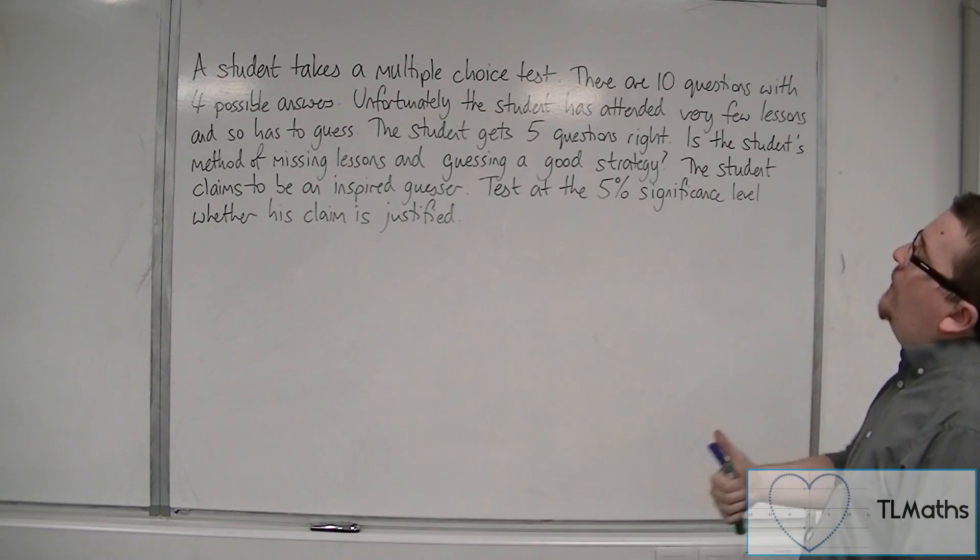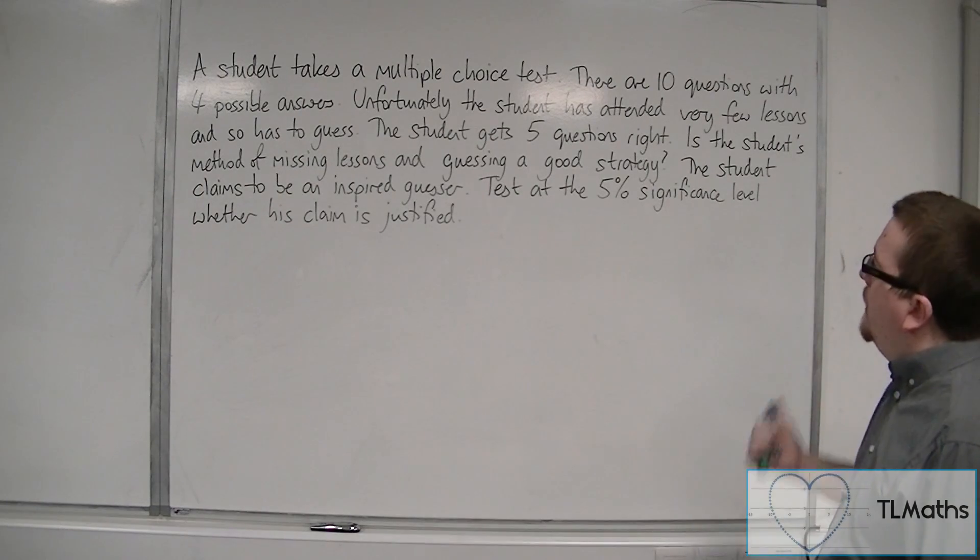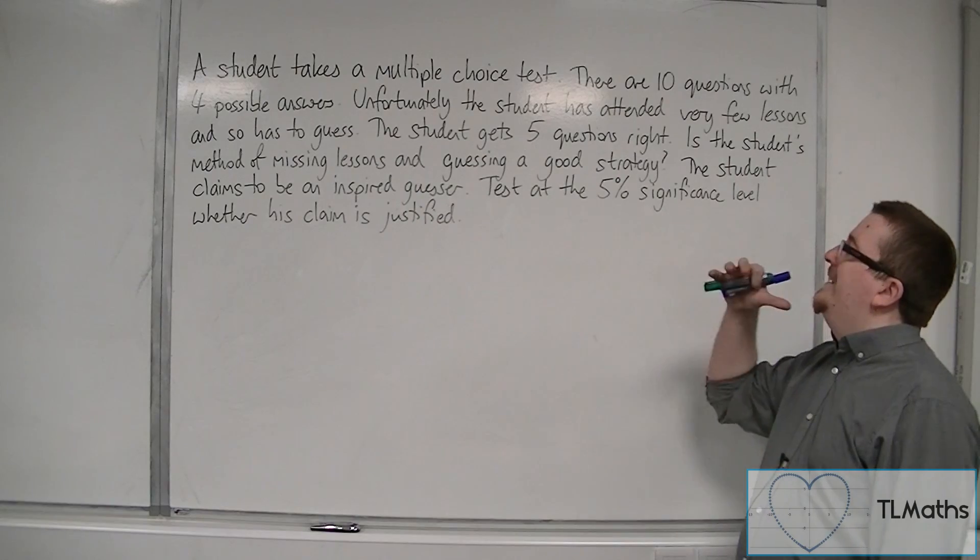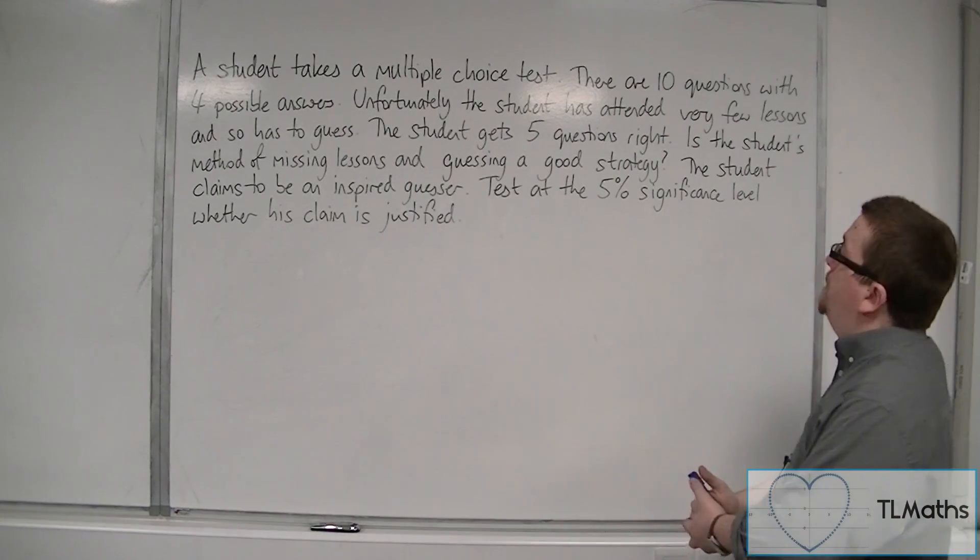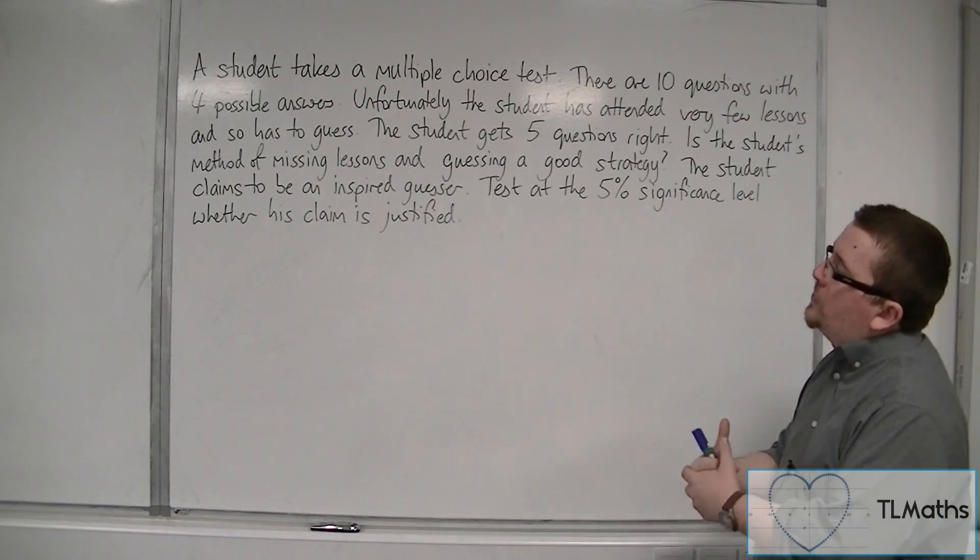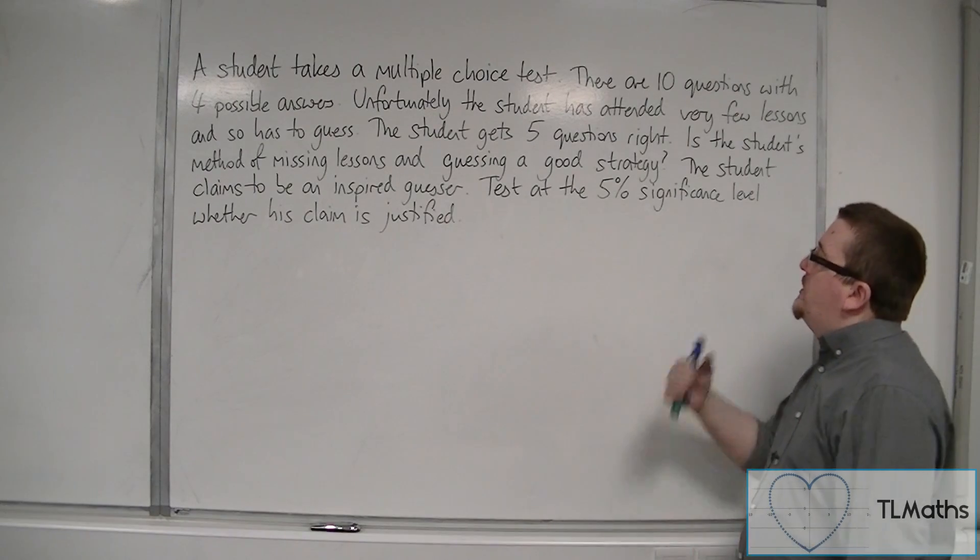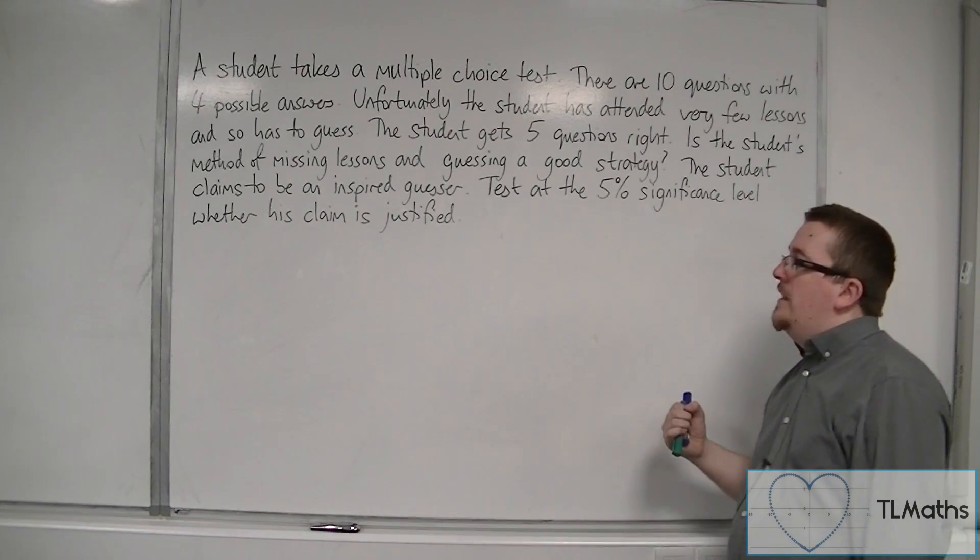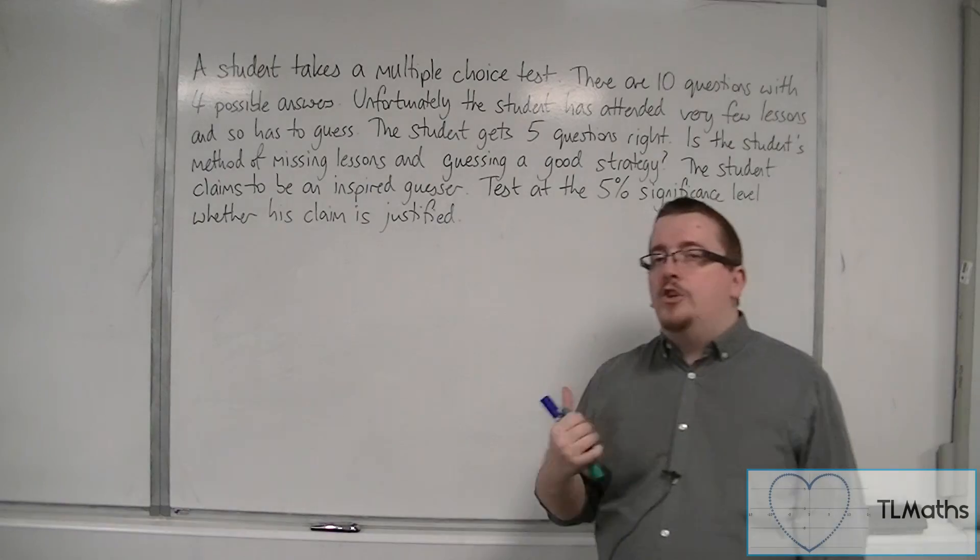The student gets five questions right. Is the student's method of missing lessons and guessing a good strategy? The student claims to be an inspired guesser. Test at the 5% significance level whether his claim is justified.